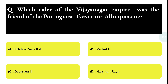Next question: which ruler of the Vijayanagara Empire was the friend of the Portuguese governor Albuquerque? Option A: Krishna Dev Raya, Option B: Vanguard 2, Option C: Dev Raya 2, Option D: Narissing Raya. The correct answer is option A, that is Krishna Dev Raya.